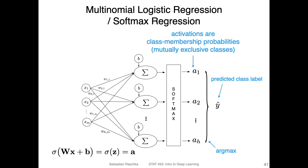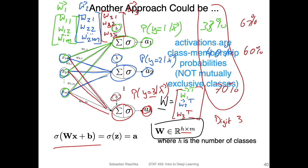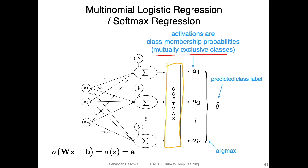For that, we have the multinomial logistic regression model or softmax regression model. What I showed before was more like a concatenation of individual logistic regression models. In the real multinomial logistic regression model, we assume the classes are mutually exclusive. The difference is that instead of a sigmoid activation at each node, we use a softmax activation. The softmax activation is not independent for each node — all activations go into the same softmax computation, and what comes out are activations that sum up to one.